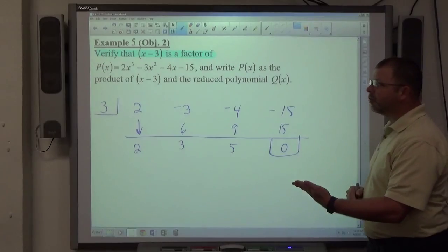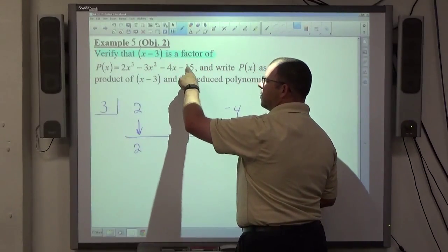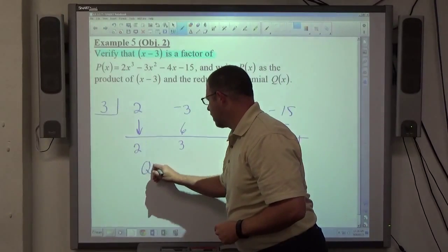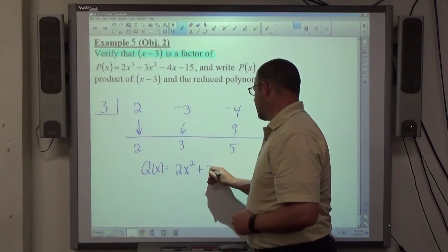So the quotient of 2x³ - 3x² - 4x - 15 and x - 3, they're calling it q(x), is 2x² + 3x + 5.